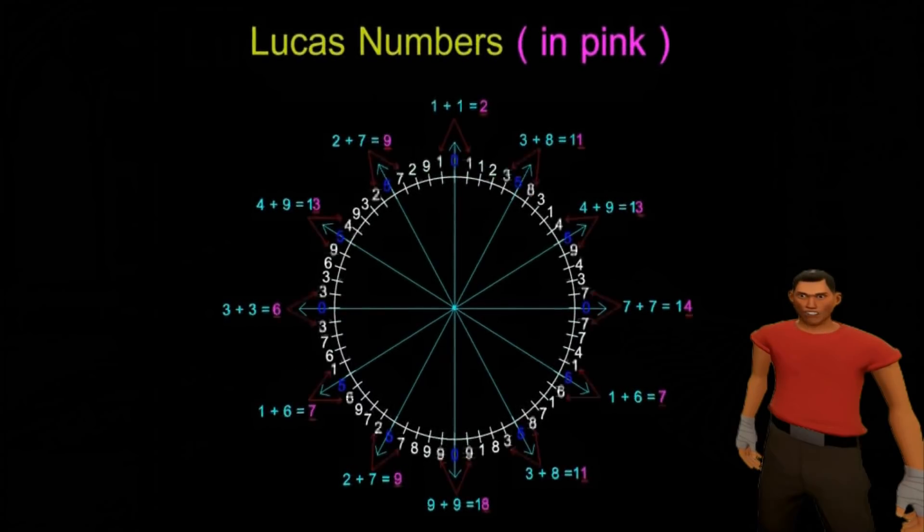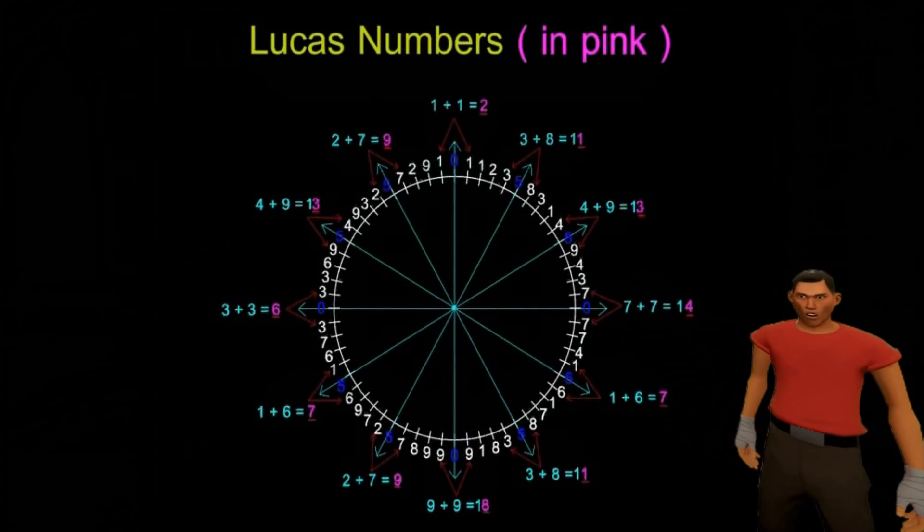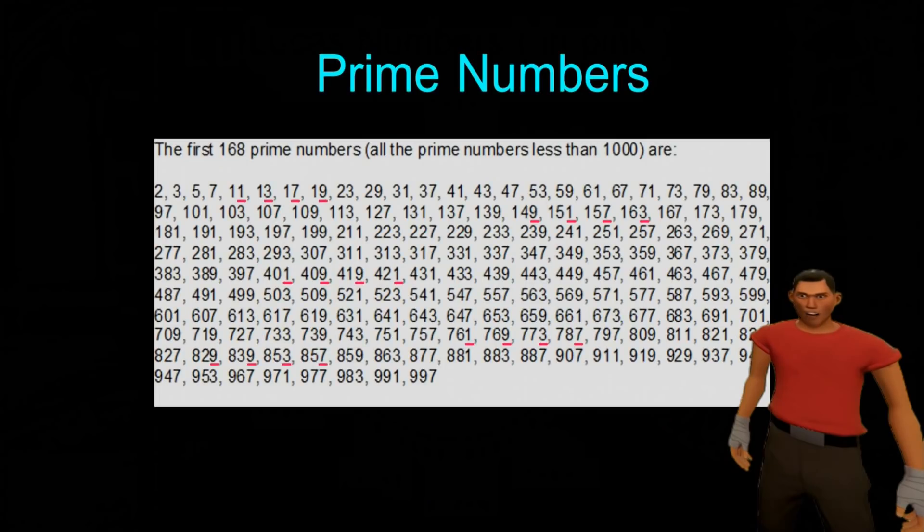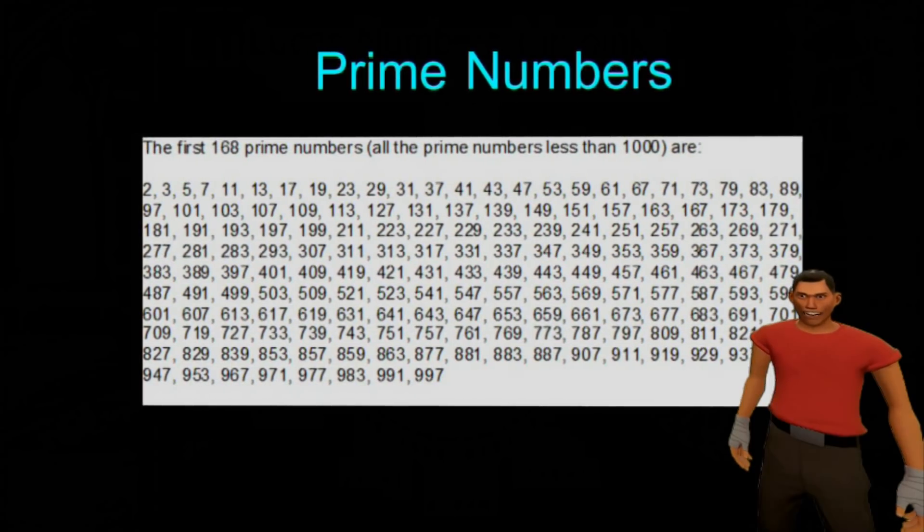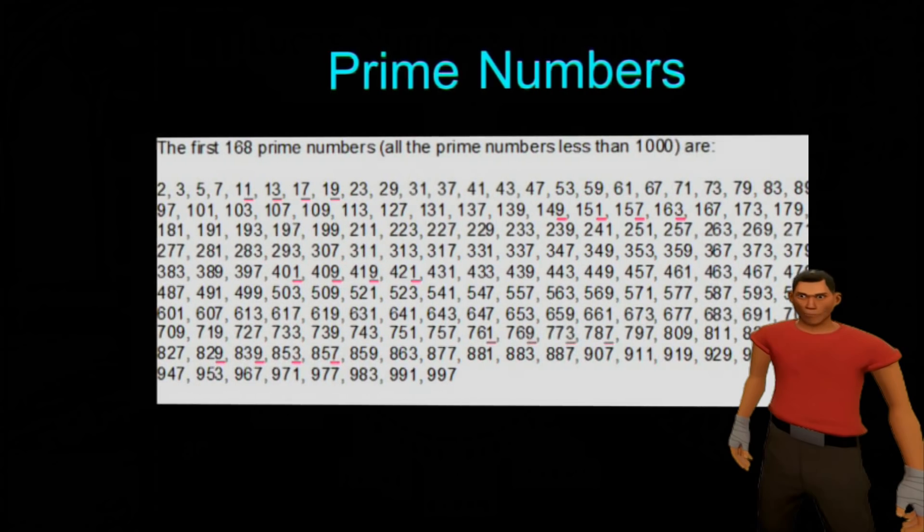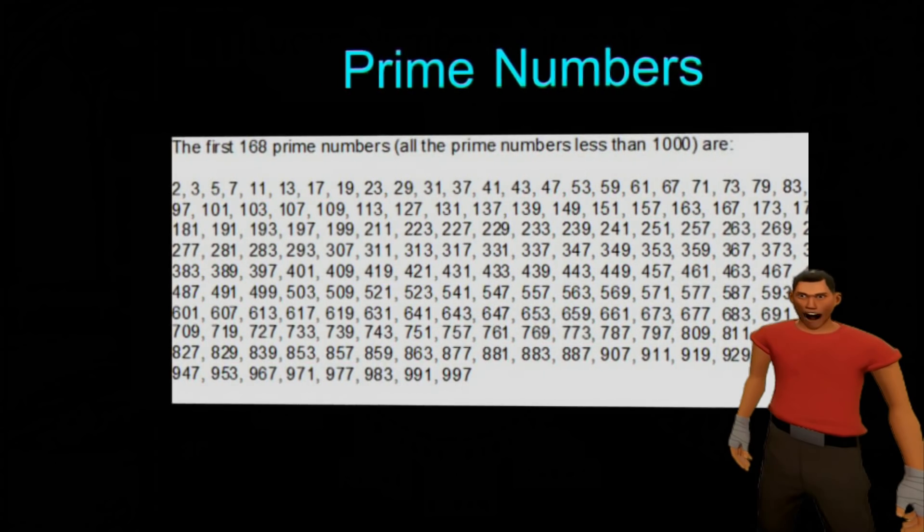Aside from the Fibonacci series and the Lucas series, there is another very famous set of numbers. These are the prime numbers. Every prime number greater than 10 will always end in either a 1, a 3, a 7 or a 9.